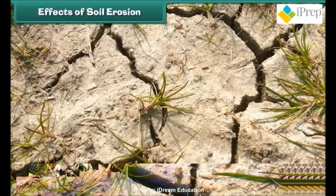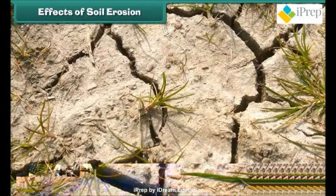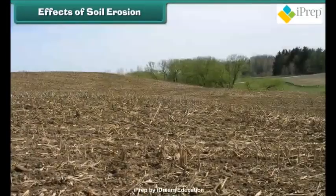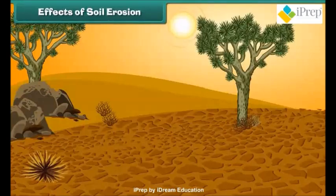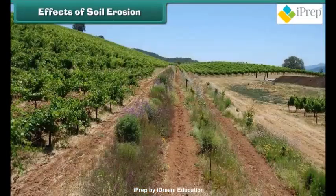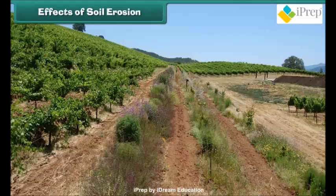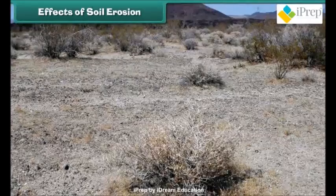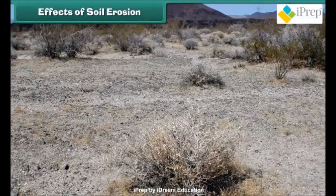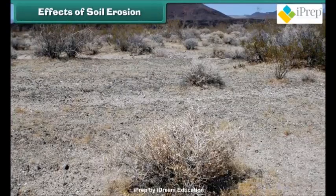Soil erosion leads to many unfavorable conditions. It results in the loss of soil and breakdown of the soil structure. It decreases soil fertility due to a decrease in the amount of organic matter. It also reduces the moisture content of soil, resulting in drought conditions. Decreased soil fertility leads to a decrease in the quality and quantity of crops.